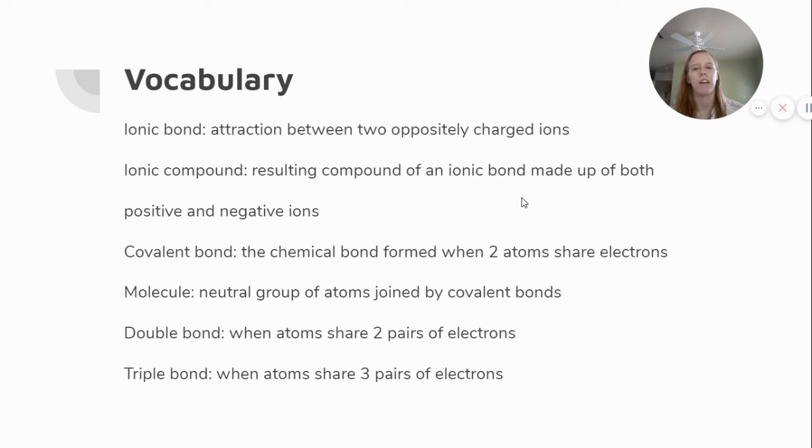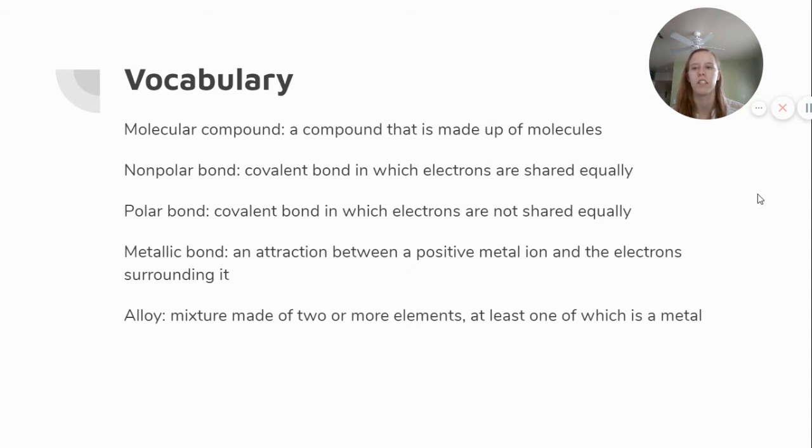A covalent bond is the chemical bond formed when two atoms share electrons. A molecule is a neutral group of atoms joined by covalent bonds. A double bond is when atoms share two pairs of electrons. A triple bond is when they share three pairs of electrons. A molecular compound is a compound that is made up of molecules. A nonpolar bond is a covalent bond in which electrons are shared equally.